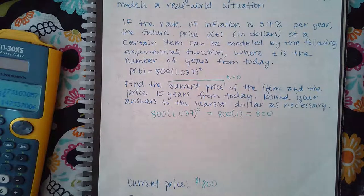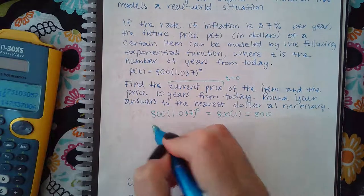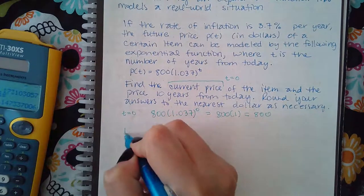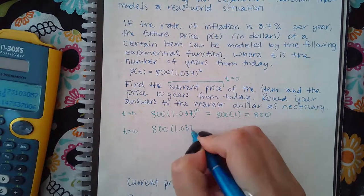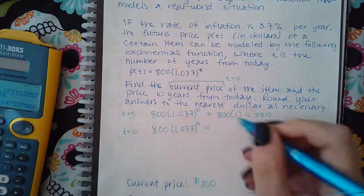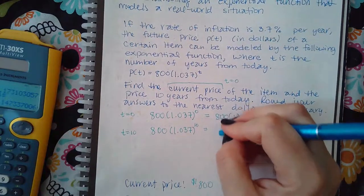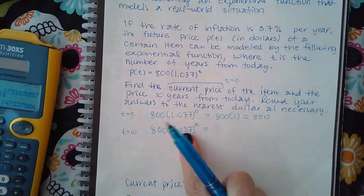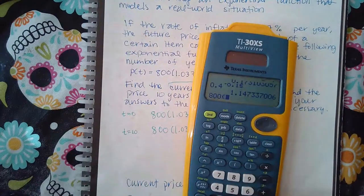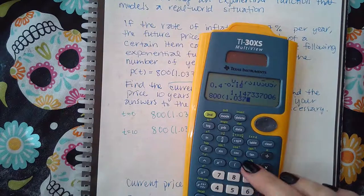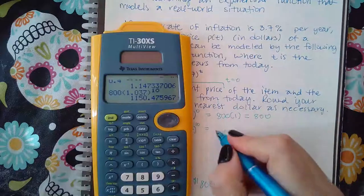And so then I have that $800 is the current price. Now the next one says what happens 10 years from today. Well, that means that my t value is now 10, and so I'm taking that expression and I'm plugging in 10. I don't even need to do that manually because the whole thing can be typed in the calculator.